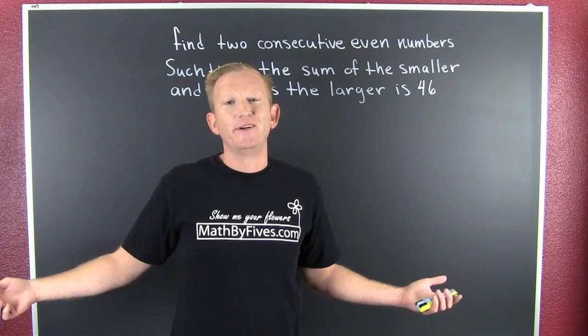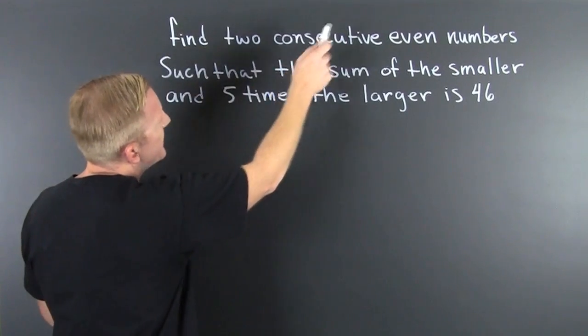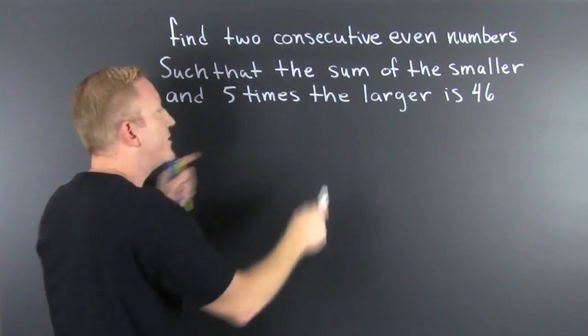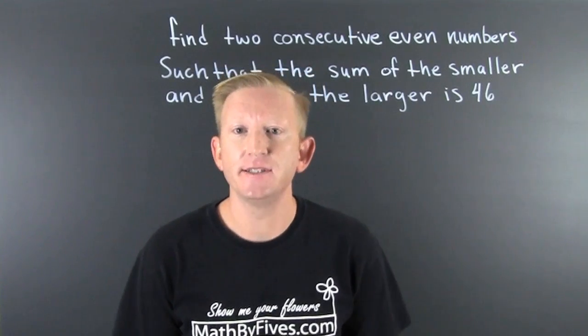I'm going to try to get even on this next one. What do we have? We're left with this task. We want to find two consecutive even numbers such that the sum of the smaller and five times the larger is 46. And you're like, sick.